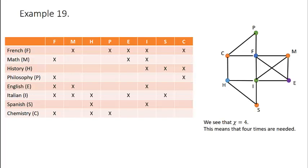And what this tells us in our problem is that four different time slots are needed. So looking at colors, in time slot one, these are our blue vertices. In time slot one, we can schedule exams for French and History. In time slot two, our green vertices, we can schedule the exams for Philosophy and Italian. In time slot three, our orange vertices, we can schedule exams for Chemistry, Mathematics, and Spanish. And in time slot four, we have English.